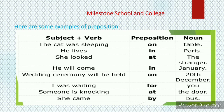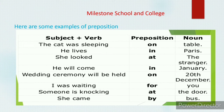For example, consider the sentence 'The cat was sleeping.' This is a complete sentence. We can link it with the noun 'table' using the preposition 'on': 'The cat was sleeping on the table.' Similarly, 'He lives in Paris' — subject and verb linked with noun using 'in.' 'She looked at the stranger' — 'stranger' is the noun linked with 'at.' 'He will come in January.' 'Wedding ceremony will be held on 20th December.' 'I was waiting for you.' 'Someone is knocking at the door.' 'She came by bus.'